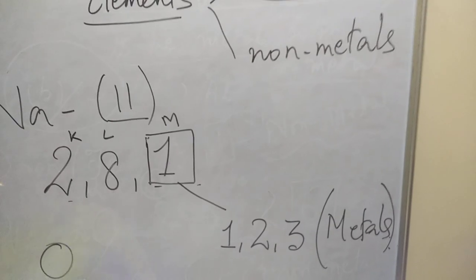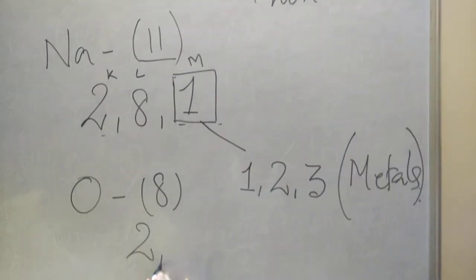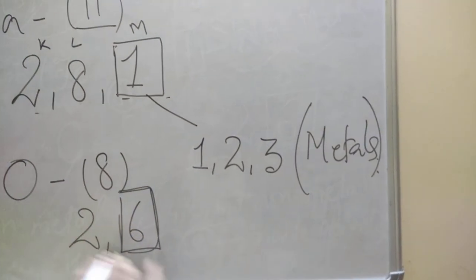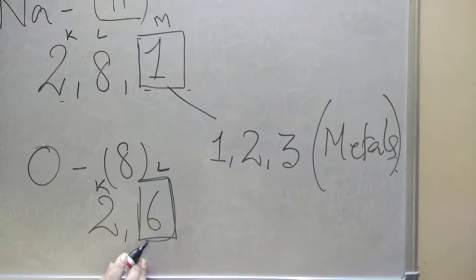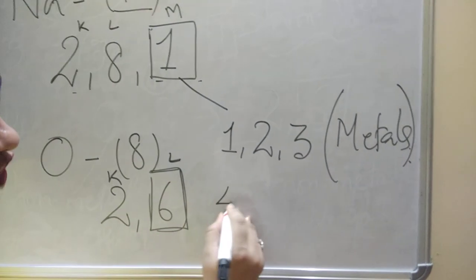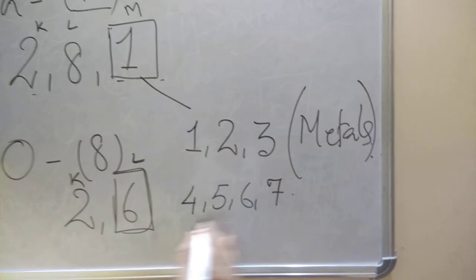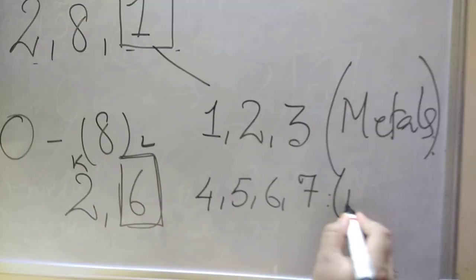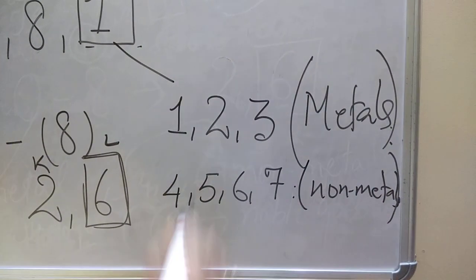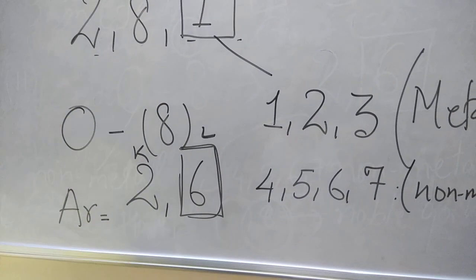For example, oxygen, whose atomic number is 8 — if I distribute it, it comes to 2 and 6. Its last shell is the L shell, having 6 electrons. If the last shell has 4, 5, 6, or 7 electrons, we consider them to be non-metals.